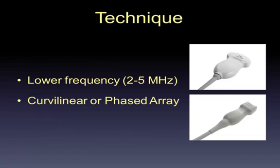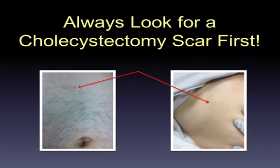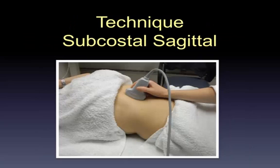You've got to start by choosing the right probe. You're usually going to use something in the lower frequency range, around 2 to 5 megahertz — the curved or phased array probe, sometimes called the abdominal probe. Important point: look for a cholecystectomy scar or just ask the patient if they've had their gallbladder out. Once you've got the right probe and your machine on the gallbladder setting, start with a subcostal sagittal technique — midclavicular line on the right under the costal margin with the indicator towards the patient's head.